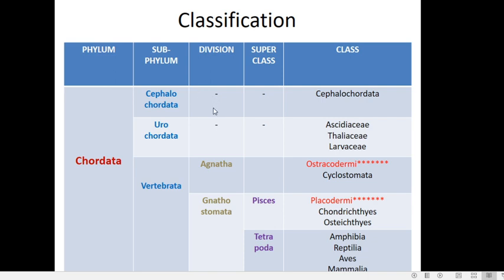The second category is Urochordata. They too possess a notochord, but it is present only in the tail region — hence the name Urochordata. This notochord is seen only in the larval stages; in the adult, you cannot see the tail or the notochord. So for an organism to be called a chordate, the notochord needs to be present only at any stage of the life cycle.